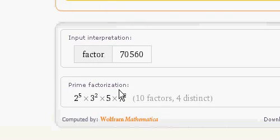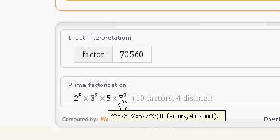When it gets factored, it equals 2 to the 5th times 3 to the 2nd times 5 times 7 to the 2nd. There's 10 factors.